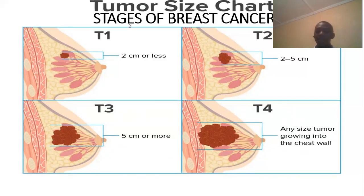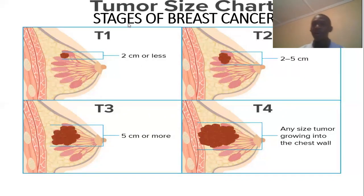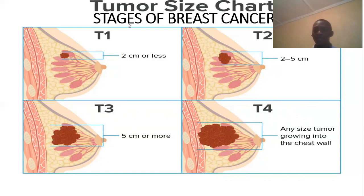At stage four, which is the last stage, the cancer cells spread to other distant organs such as the liver and lungs through the blood and lymph nodes. This is the end stage of cancer — at this point the patient has very little life ahead of them because the cancer has metastasized to other body regions.